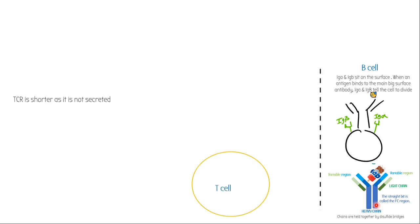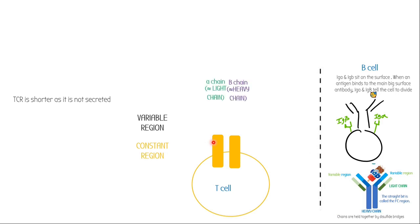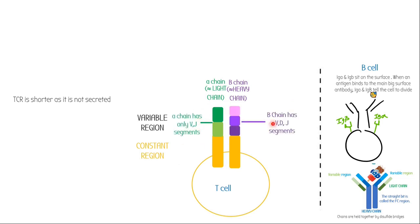On your T-cell, it's kind of analogous because you also have a constant region and a variable region. However, the T-cell receptor is shorter as it's not secreted — the B-cell receptor eventually becomes an antibody, so it's longer. Like the B-cell has a heavy chain and a light chain, the T-cell has two chains: an alpha chain and a beta chain. The alpha chain is similar to the light chain and the beta chain is similar to the heavy chain. The light chain only has V and J recombination, whereas the heavy chain has VDJ — so the alpha chain only has VJ segments and the beta chain has VDJ segments.